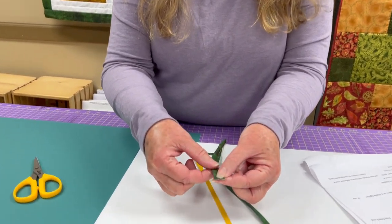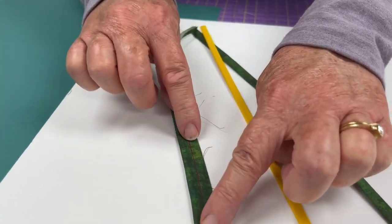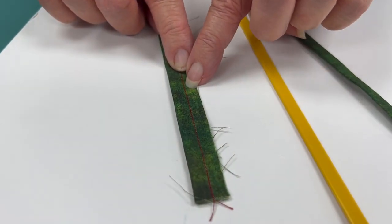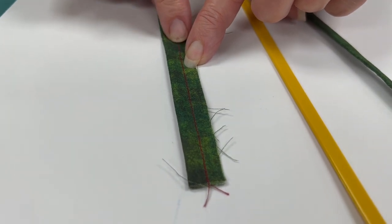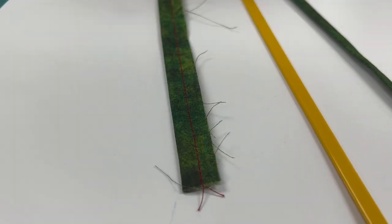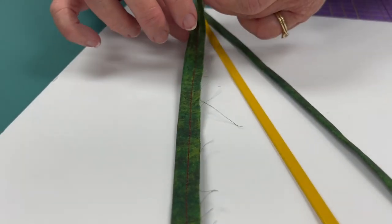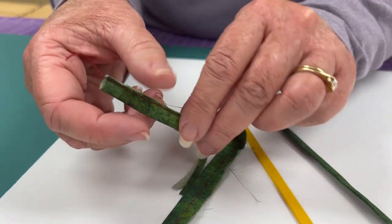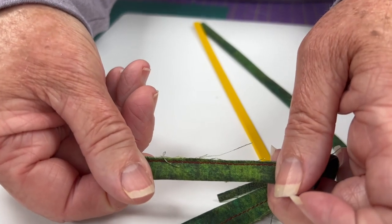So you will put the fabric wrong sides together, sew it with a normal quarter inch seam and I've sewed mine in red so you guys can hopefully see it here on the video. And then after you have sewn it, remember wrong sides together, you will trim it down to about an eighth of an inch.